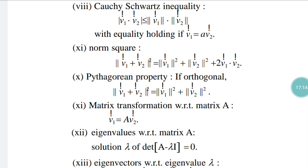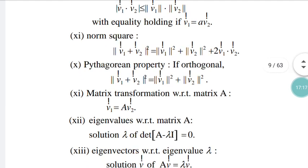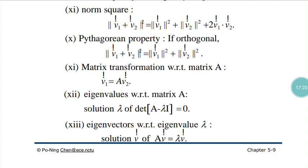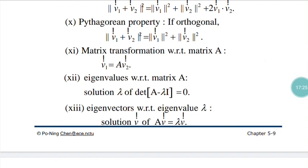The matrix transformation with respect to matrix A: we can write V1 equals A of V, so they must be linear in nature. The eigenvalues with respect to matrix A are the solution of det(A − λI) = 0, where I is the identity. The eigenvectors are found as the solution V of AV = λV. In this way you can find the eigenvectors and eigenvalues of a matrix, though they are not required for this course.